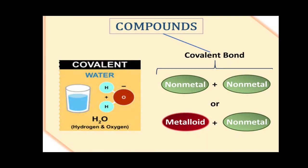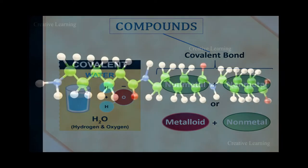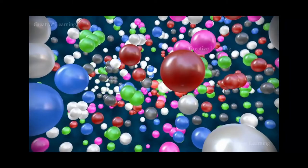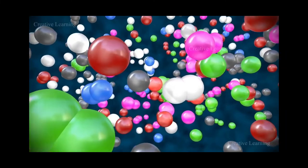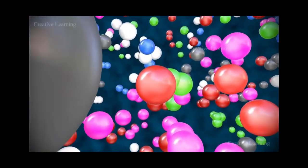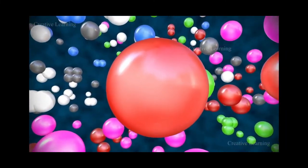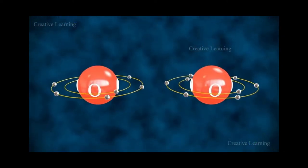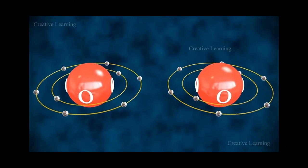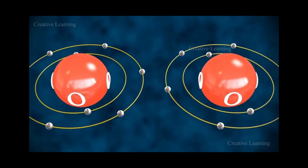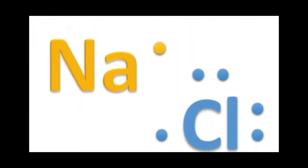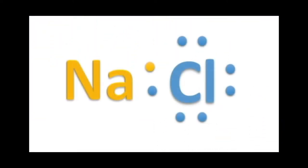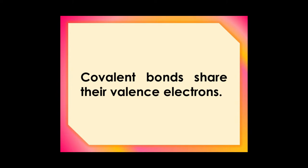Let's move on to covalent compounds. Covalent compounds are substances that are formed from the chemical combination of two or more non-metallic elements. This could be between a non-metal and another non-metal, or non-metal and a metalloid. Atoms of the different elements are held together in molecules by covalent bonds. Unlike ionic bonds, where electrons are completely transferred from one atom to another, covalent bonds share their valence electrons.